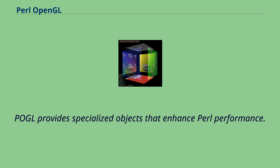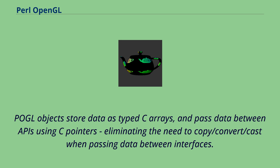Pugl provides specialized objects that enhance Perl performance. Pugl objects store data as type C arrays, and pass data between APIs using C-pointers, eliminating the need to copy, convert, or cast when passing data between interfaces.